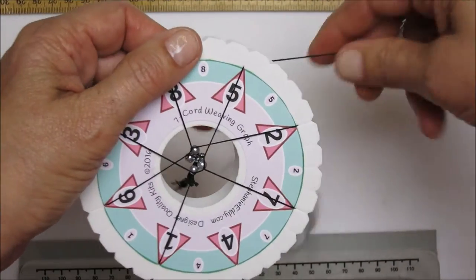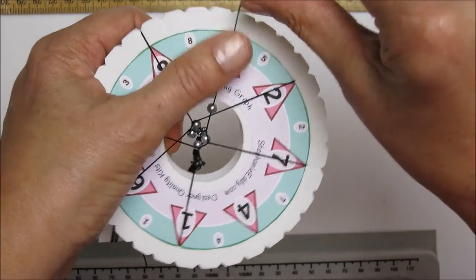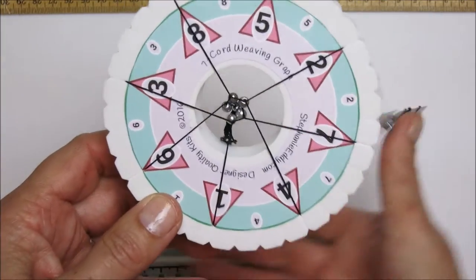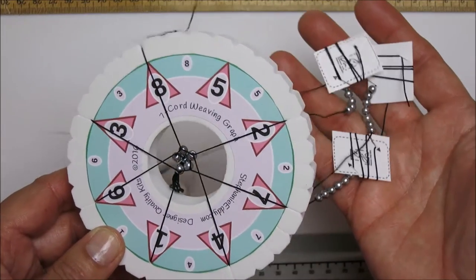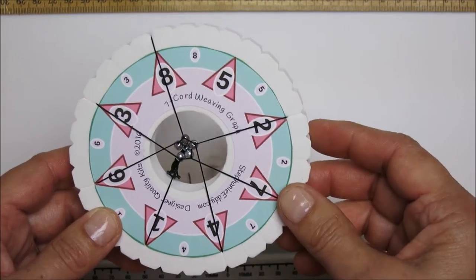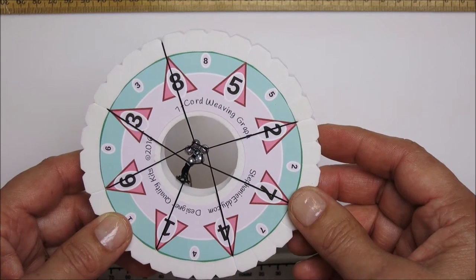Number five, drop it down, and there we go. So we will continue all the way around until we have used up the amount of pearls, the number four millimeters that it calls for in the pattern. And then we'll start the next step.